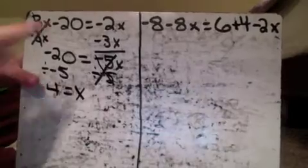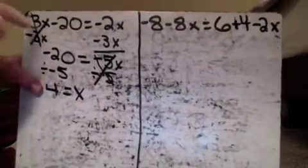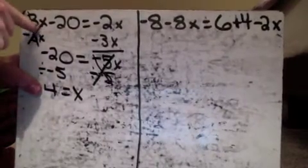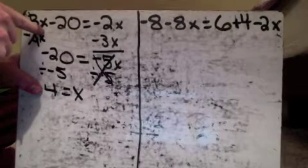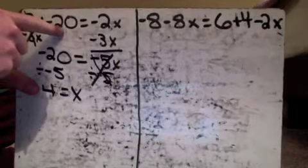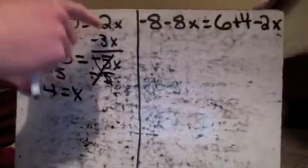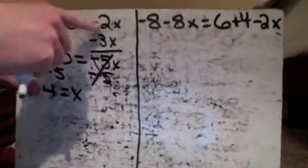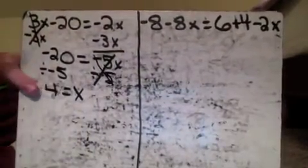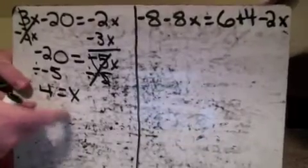So for this one I've got x equals 4. And don't forget you can always go back and check to see if it makes sense in the original problem. If I put 4 up here, 3 times 4 is 12, 12 minus 20 is negative 8. Over here negative 2 times 4 is also negative 8. So if they both equal the same thing you know you got it right, so that one works out.